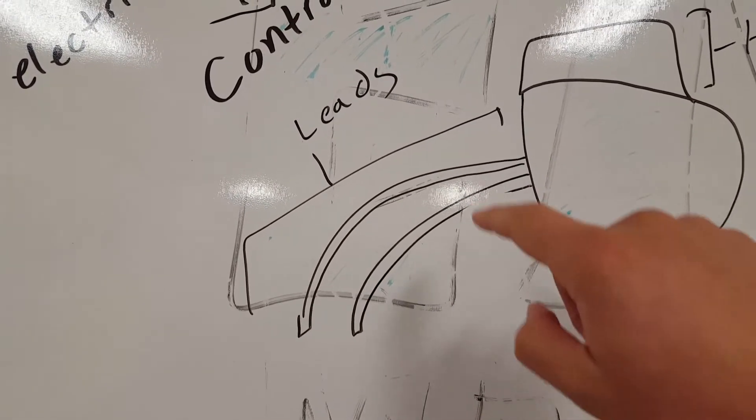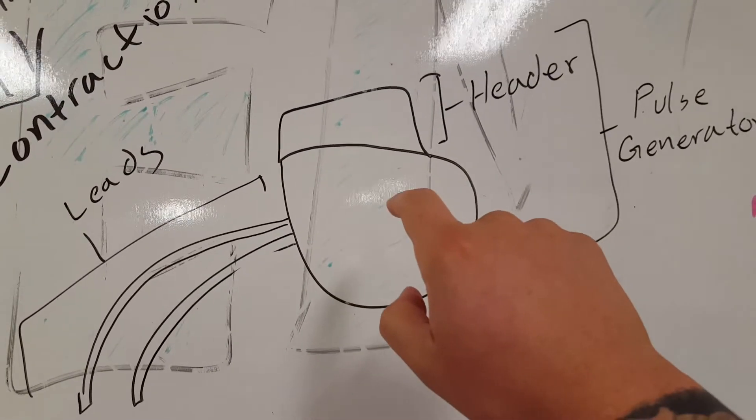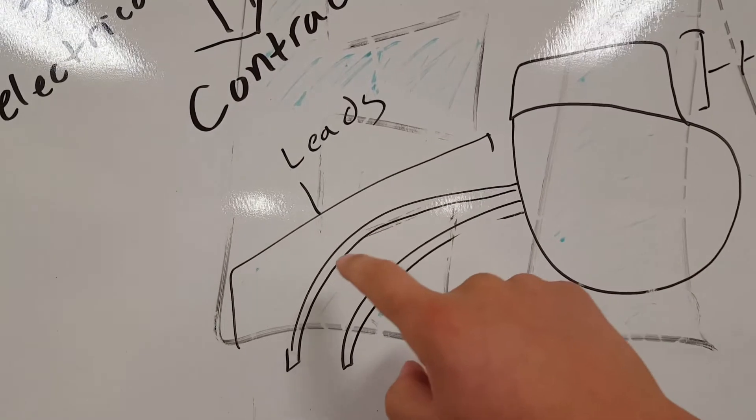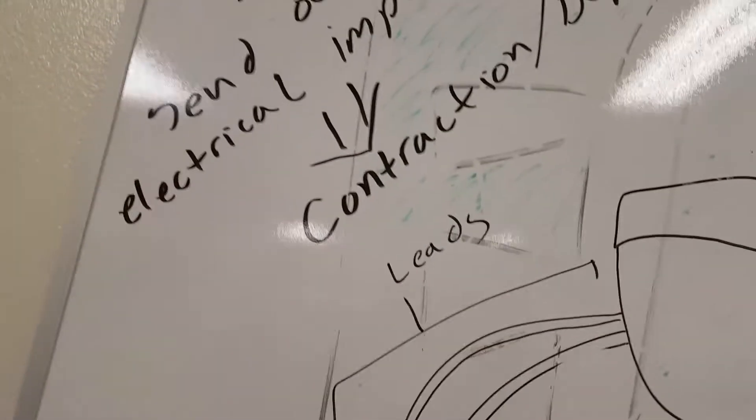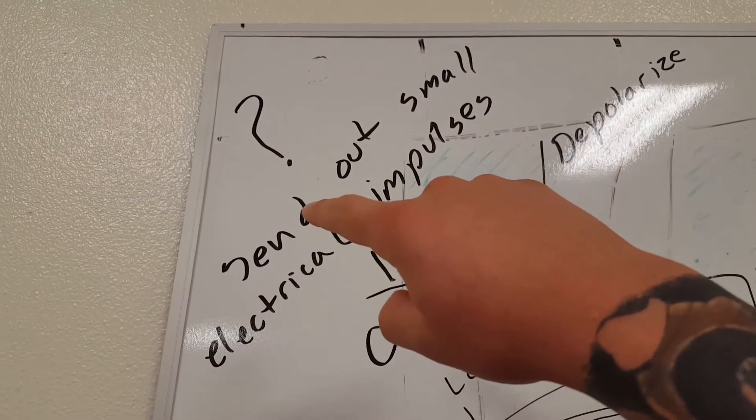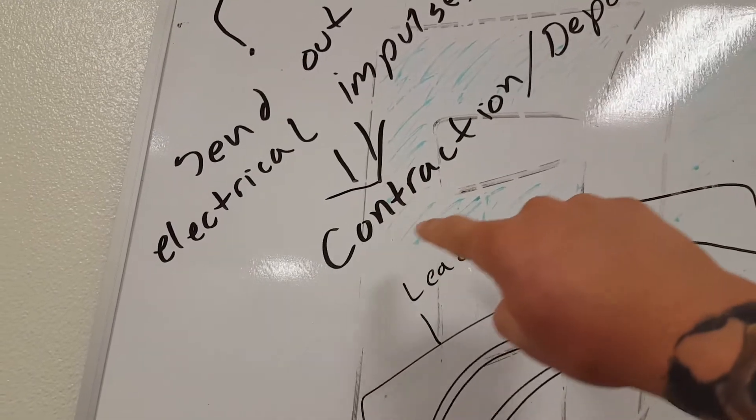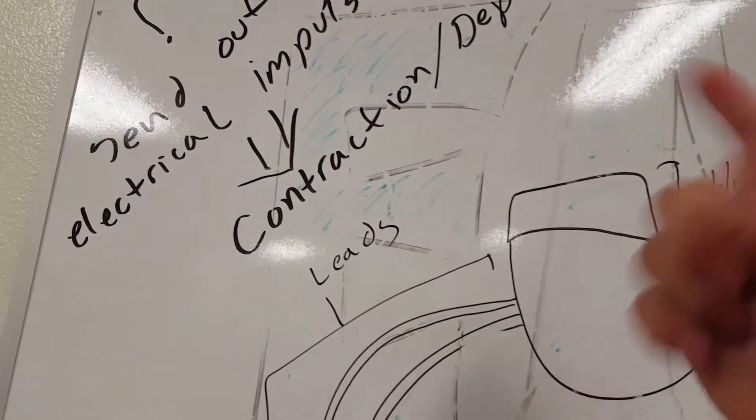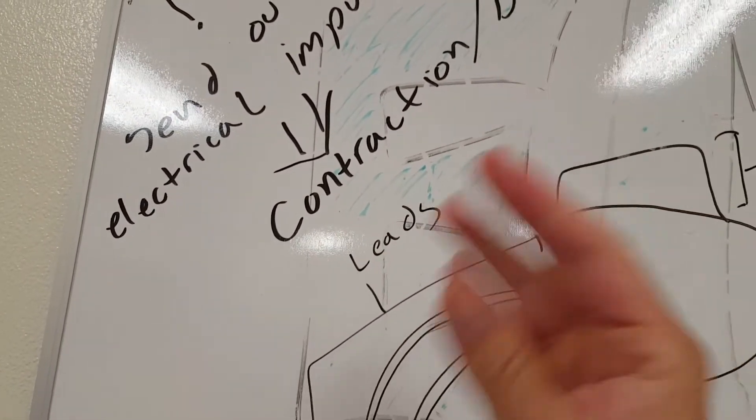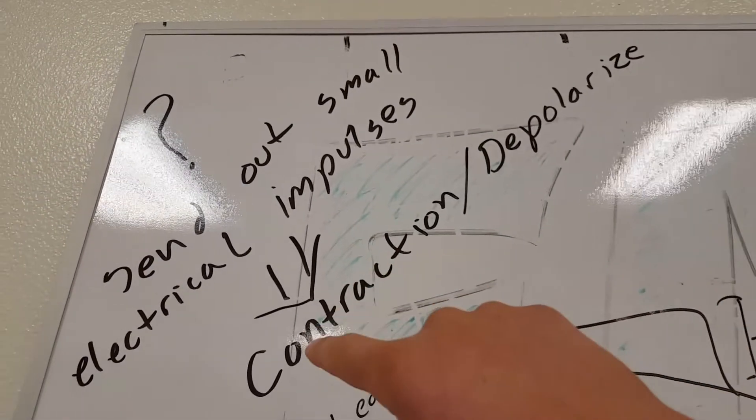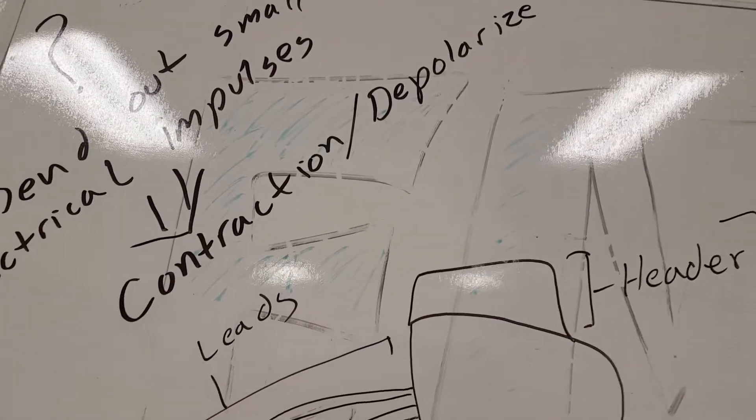Now some pacemakers will have only one wire or two wires, and again it depends on what's going on with your patient's heart. Now the little impulses, the electrical impulses that are sent to the heart, will allow the heart to contract. So remember, if you've seen a previous video, contract means squeezing. So it's going to allow the heart to squeeze and pump that blood to where it needs to go. And contraction means the same as depolarize - so depolarize, contract, squeeze, it all means the same thing, just different and fancier ways of saying things.